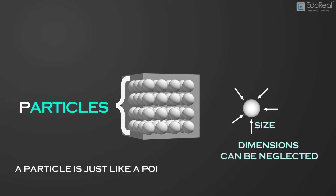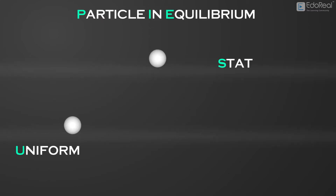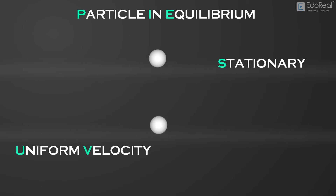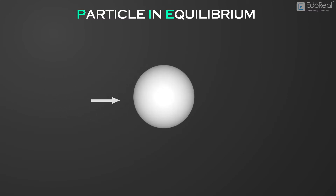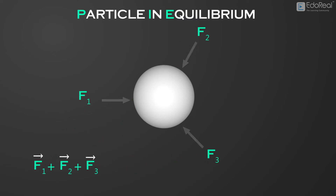So, a particle is just like a point which is not having a size. Therefore, a particle is said to be in equilibrium if it is stationary, or it moves uniformly relative to an inertial reference frame. We can also say it in another way: a particle is said to be in equilibrium if the vector sum of the external forces acting on it is zero.